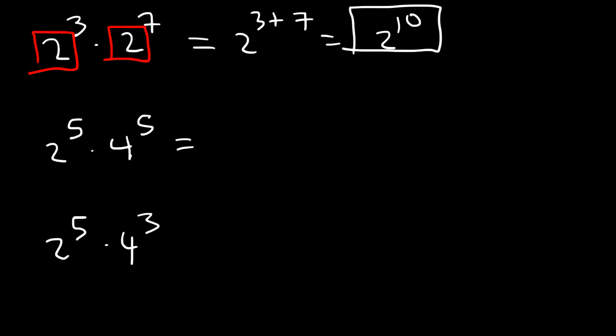Now, in the second example, notice that the base is not the same, but the exponents are the same. When the exponents are the same, you can multiply the bases. 2 times 4 is 8. So this is going to be 8 to the 5th.